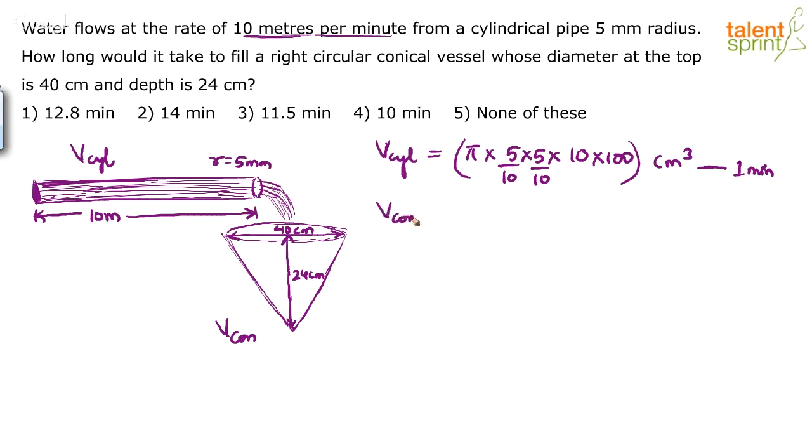Now, volume of the cone. What is the volume of a cone? 1 by 3 pi r squared h. So, 1 by 3 into pi into r squared. What is r? The radius - diameter is 40. D equals to 40 implies the radius is 20. 20 centimeters. 20 into 20 pi r squared h. Height is 24. Here, everything is in centimeters already, so we don't have to convert anything. Centimeter cube. In how many minutes is the question?